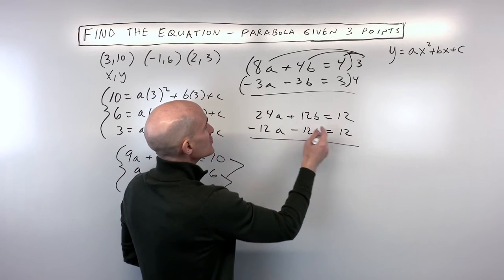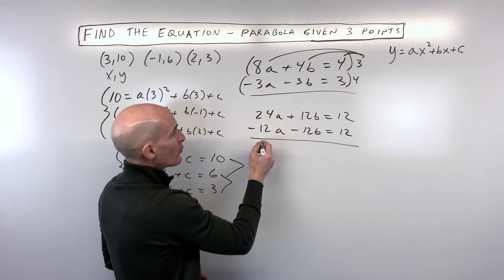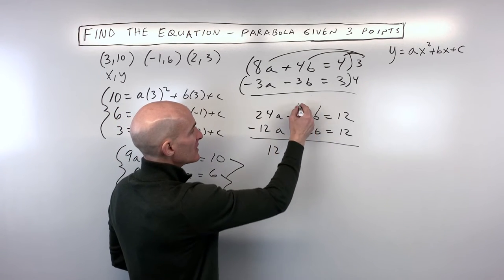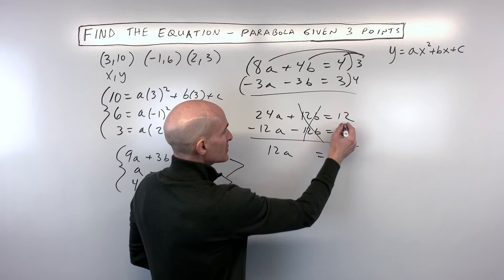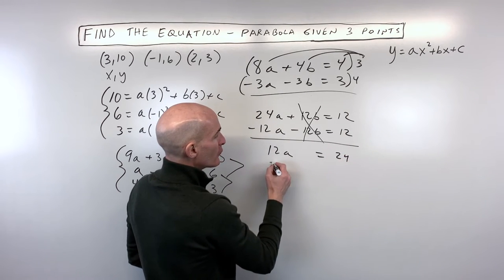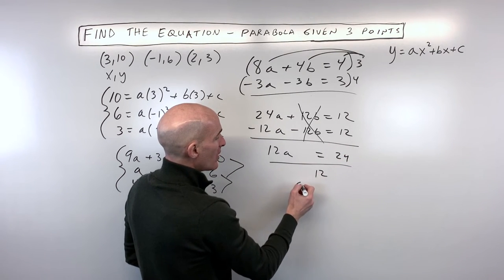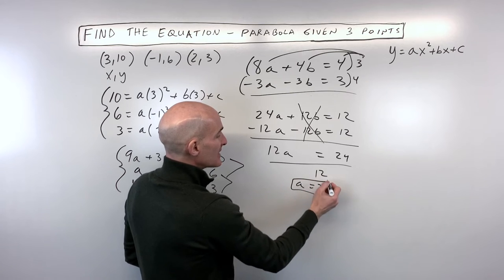And now we can add straight down. So 24a minus 12a is 12a. 12b and negative 12b cancel. And 12 plus 12 is 24. Now if we divide both sides of the equation by 12, you can see we're getting a is equal to 2.